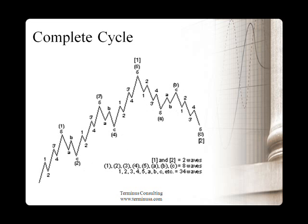We can see a complete pattern: waves 1, 2, 3, 4, and 5 are all part of one larger wave. So we have a big wave 1, very large, that is subdivided into 5 waves. Waves 1, 3, and 5 of this pattern are also subdivided into 5, while waves 2 and 4 — which are corrections inside the first impulse — are divided into 3. The degrees of these corrections are minor in respect to the wave 2 of a larger degree that we can see on the chart.